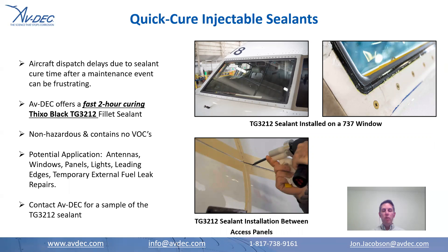Next, I want to talk about quick curing injectable sealants. One of the frustrating things is you get your maintenance done but you can't dispatch because you're waiting on your sealant to cure — some sealants may take anywhere from nine to ten hours to cure. What AVDEC offers is a fast curing two-hour Thixel Black TG-3012 sealant for fillet sealing. It's non-hazardous, so you don't need any special hazmat paperwork to ship it, which comes in handy when you have an AOG. Some of the places where it can be installed include antennas, windows, panels, lights, and leading edges. It can also be used for temporary fuel leak repairs on the external part of the fuel tank. We have pictures of the TG-3212 installed on the 737 window and between some access panels. If anybody's interested in trying the AVDEC quick cure sealant, please reach out to us — we'd be happy to send you some samples of the Thixel Black TG-3212 sealant.